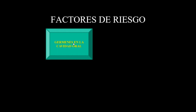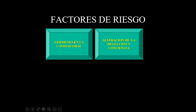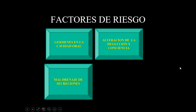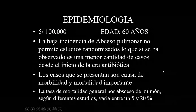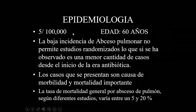Los factores de riesgo que llevan al absceso pulmonar incluyen gérmenes en la cavidad oral, especialmente relacionados al mecanismo de aspiración o microaspiración. Alteraciones de la deglución y el estado de conciencia también predisponen al desarrollo del absceso. El mal drenaje de secreciones, la inmunosupresión, el uso de corticoides, quimioterapia, y la existencia de cavidades previas o quistes también son factores relevantes. Es más frecuente después de los 60 años, con una incidencia de 5 por cada 100.000 pacientes.